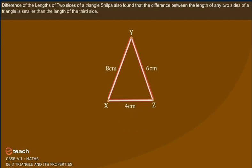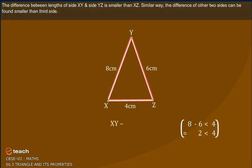Difference of the Lengths of Two Sides of a Triangle. Shilpa also found that the difference between the lengths of any two sides of a triangle is smaller than the length of the third side. The difference between lengths of side XY and side YZ is smaller than XZ. Similarly, the difference of other two sides can be found smaller than the third side.